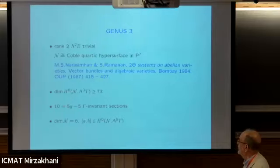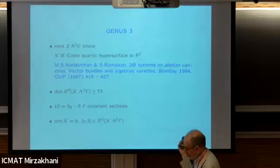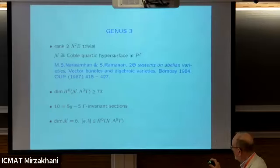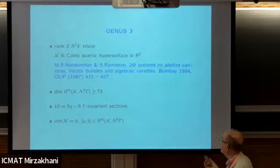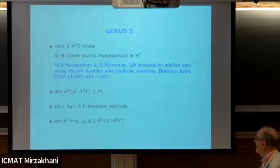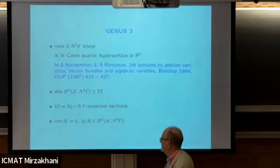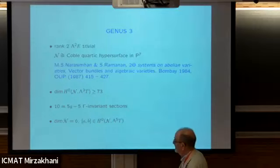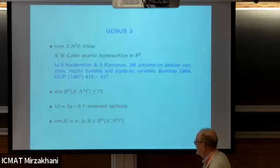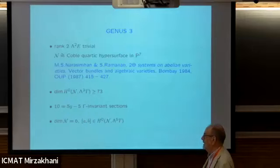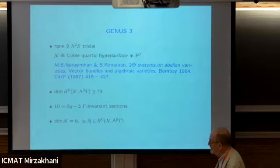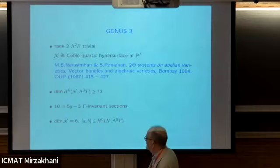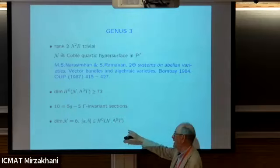In genus three with trivial determinant bundle, the moduli space is actually singular - it's a quartic hypersurface in P^7, a six-dimensional variety. If you do the calculations here, you find there are lots of trivector fields - degree-three polyvector fields. If you cut them down to the Γ-invariant ones, it turns out there are 10 - which is exactly 5g minus 5 for genus three. This 10-dimensional space of polyvector fields commutes. In this case, commutation is non-trivial because we're in six dimensions and the commutator of two trivector fields is degree five. So the fact that these vanish is non-trivial.